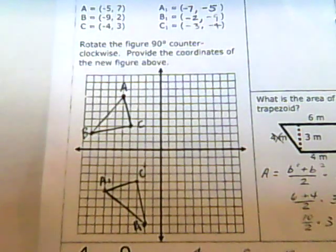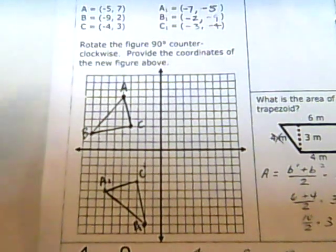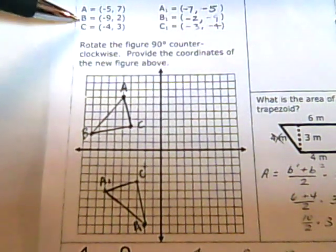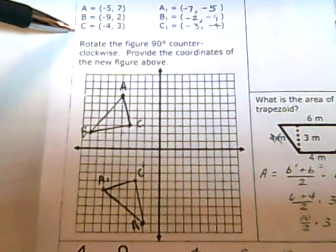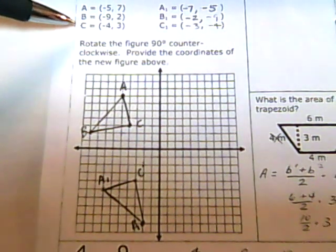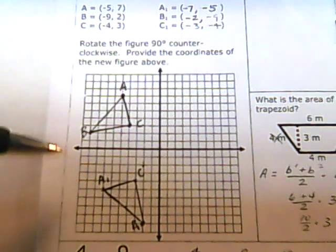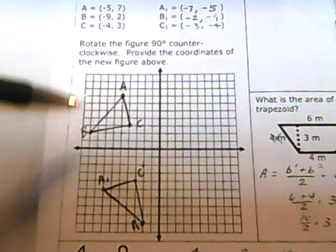Okay, so it says graph and label the points below. The first thing you have to do - they gave us these numbers: negative 5, 7; negative 9, 2; negative 4, 3. So we came down and graphed those. They're all right here.